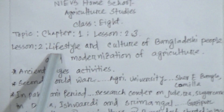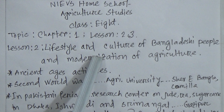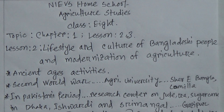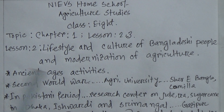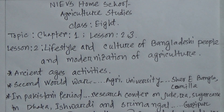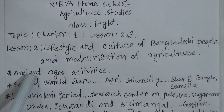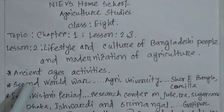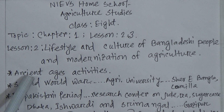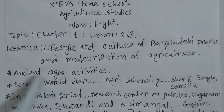Chapter 1, Lesson 2 was about the lifestyle and culture of Bangladesh people and the modernization of agriculture. You know that agriculture was the main way of income of our Bangladesh people from the ancient period. So from the ancient period we are close to the activities of agriculture. As a result, the people of the ancient period used to produce crops, but how much they produced was very limited.